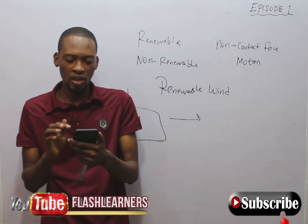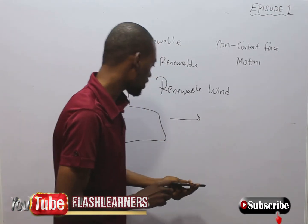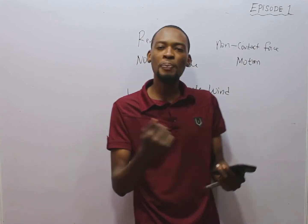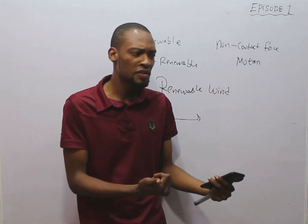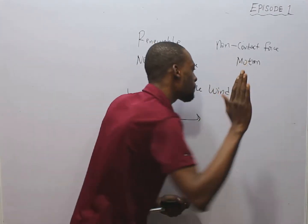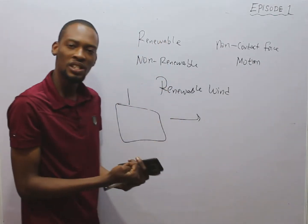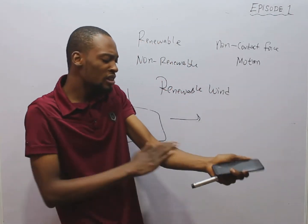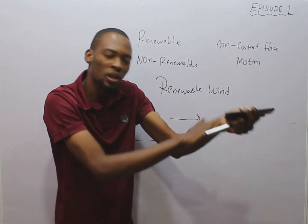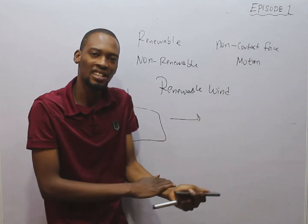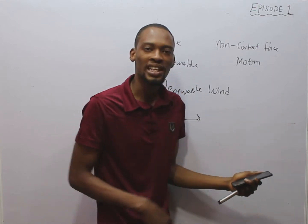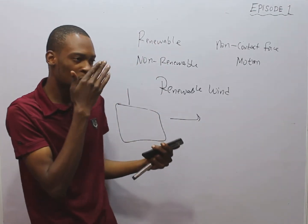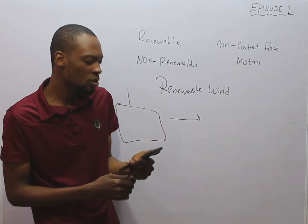Contact forces require physical contact with a body. For example, if you are pushing a board, there is contact between your hand and the board. Examples of contact forces include push, pull, and tension. Friction is also a contact force — when two bodies rub together or one tries to slide over another, there is friction. Friction results in wear and tear, such as between car tires and the ground. It is through friction that you are able to walk.